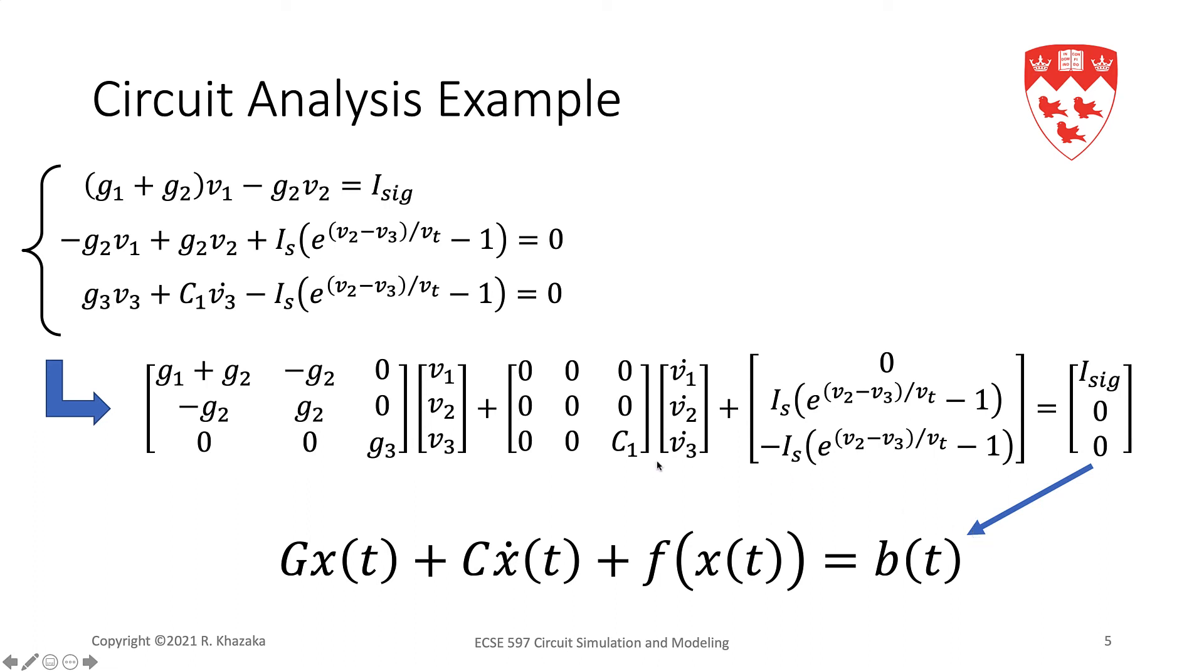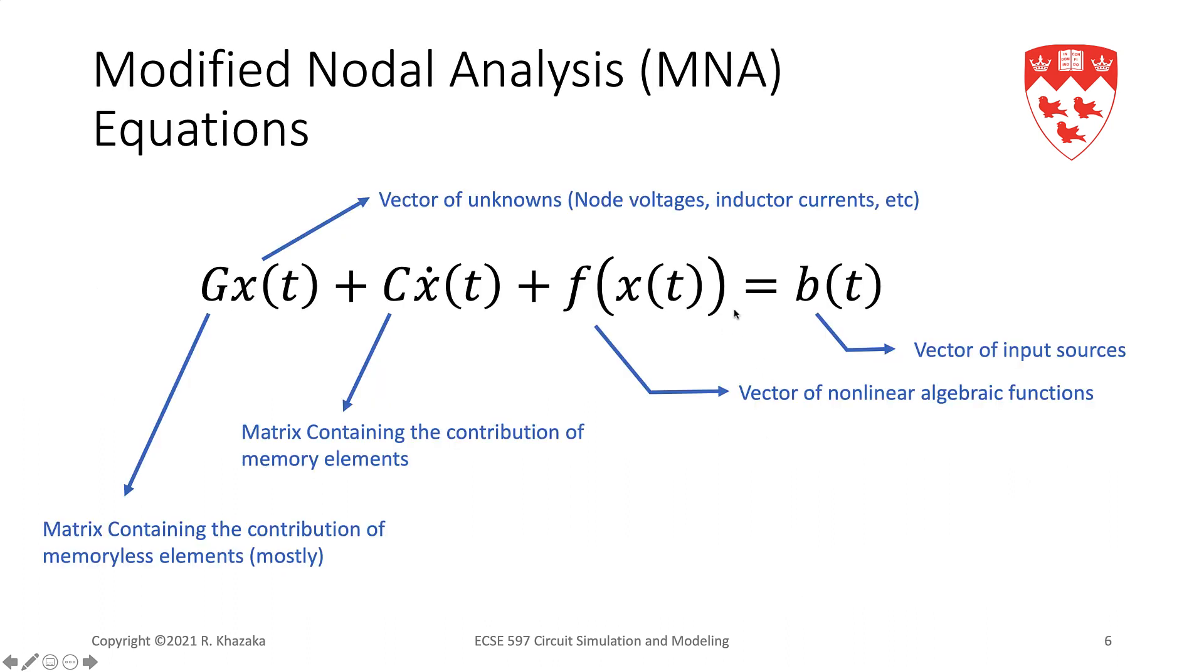And we have our right-hand side vector, which contains the independent sources. So this equation, GX + CX_dot + F(X) = B, is my MNA equation, modified nodal analysis equation.